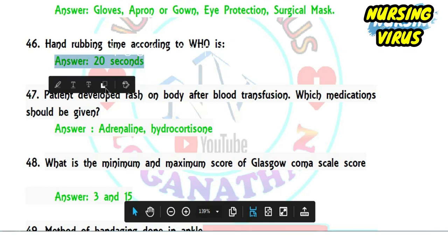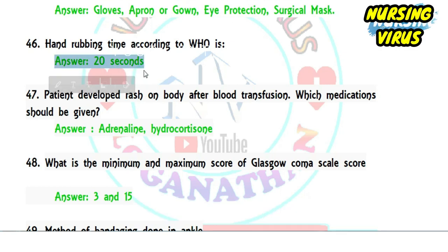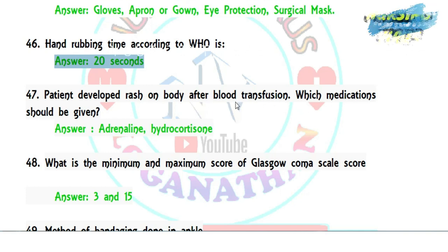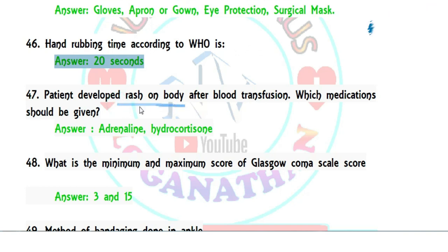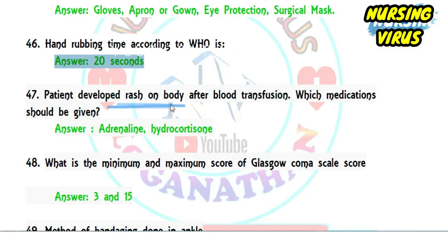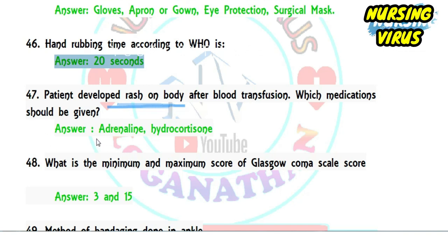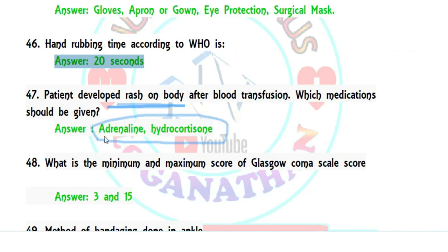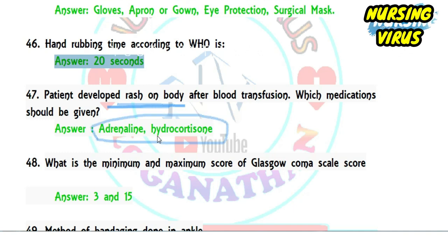Question 46: according to WHO, the recommended hand rubbing time is 20 seconds. Question 47: if a patient develops a rash after blood transfusion, what medication should be given? This indicates a blood transfusion reaction. The blood transfusion must be stopped immediately, and either adrenaline or a corticosteroid such as hydrocortisone should be administered.